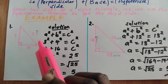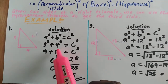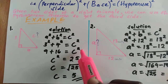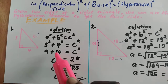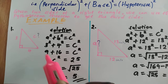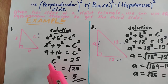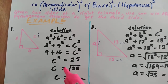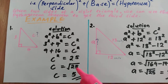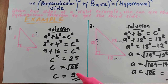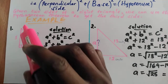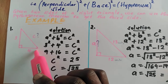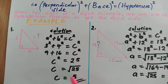3 squared is 9 and 4 squared is 16, which is equivalent to c squared. So c squared equals 16 plus 9, which is 25. If c squared equals 25, then c equals the square root of 25, so c equals 5. The hypotenuse of this right triangle is 5 units.